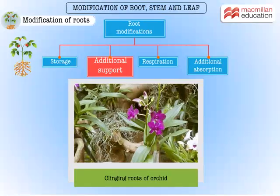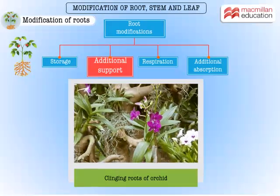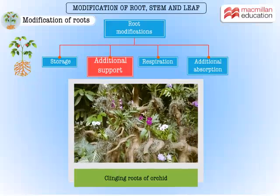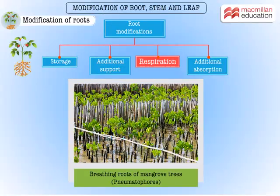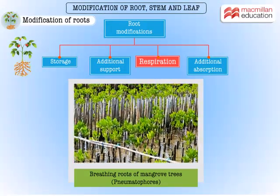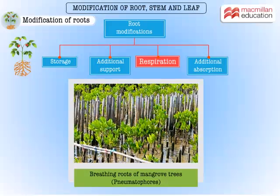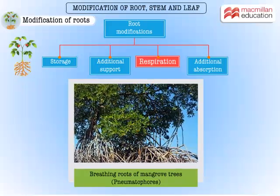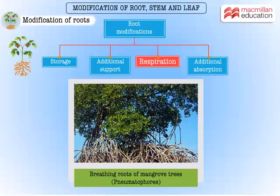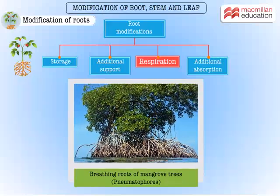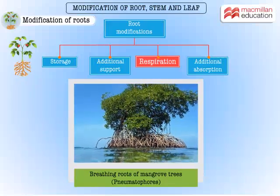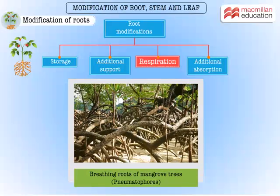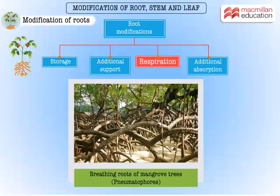Some orchids have aerial roots that are photosynthetic too. The conical spikes that you see protruding out around these trees are the modified roots. These roots are found in marshy places where they cannot get enough oxygen from the soil, so these roots grow upward and help the tree to respire.